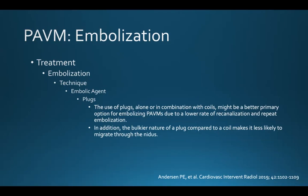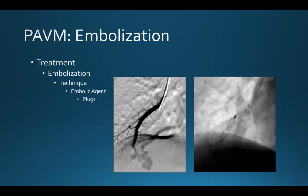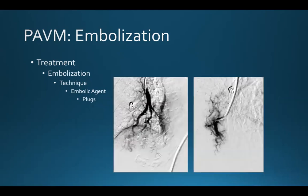The use of plugs alone or in combination with coils might be a better primary option for embolizing PAVMs due to a lower rate of recanalization and repeat embolization. The bulkier nature of a plug makes it less likely to migrate through the nidus. Both the MVP and the Amplatzer plug have demonstrated success with pulmonary AVM embolization. The MVP has the advantage that a microcatheter can be used to deploy the 3 millimeter and 5 millimeter versions of this plug when it's not always possible to get a larger delivery catheter close to the nidus.